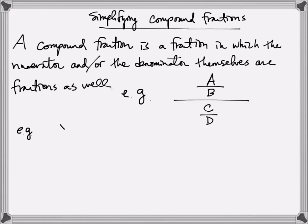Here, let's consider x over y plus 1, all divided by another expression 1 minus y over x. Method 1 is to simplify the denominator and the numerator first, and then perform division afterwards.